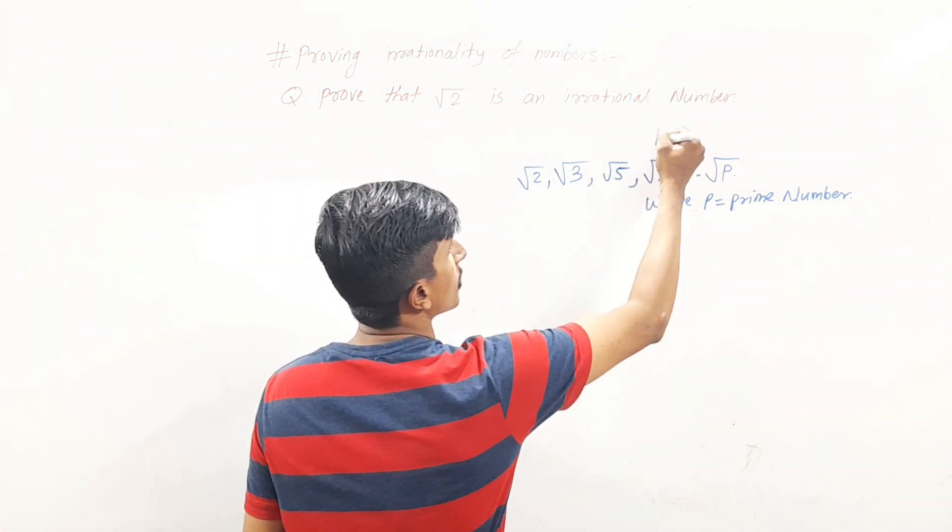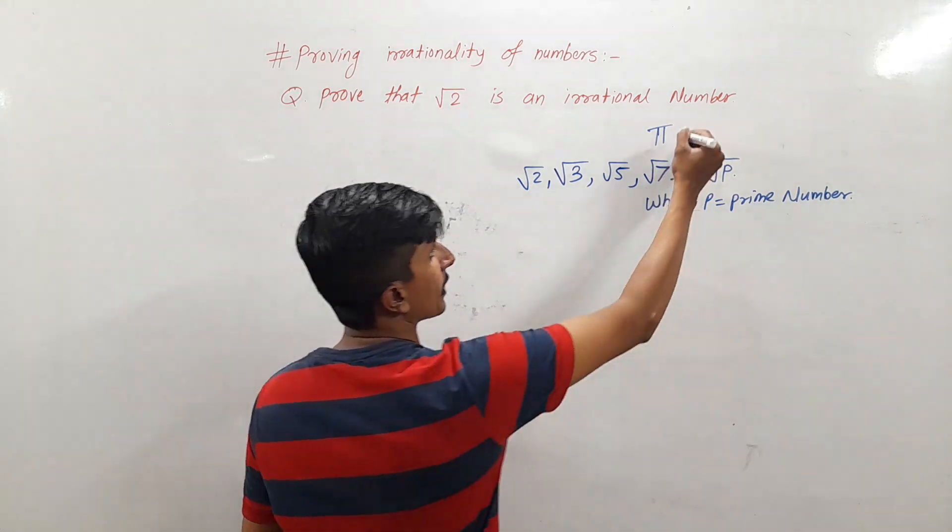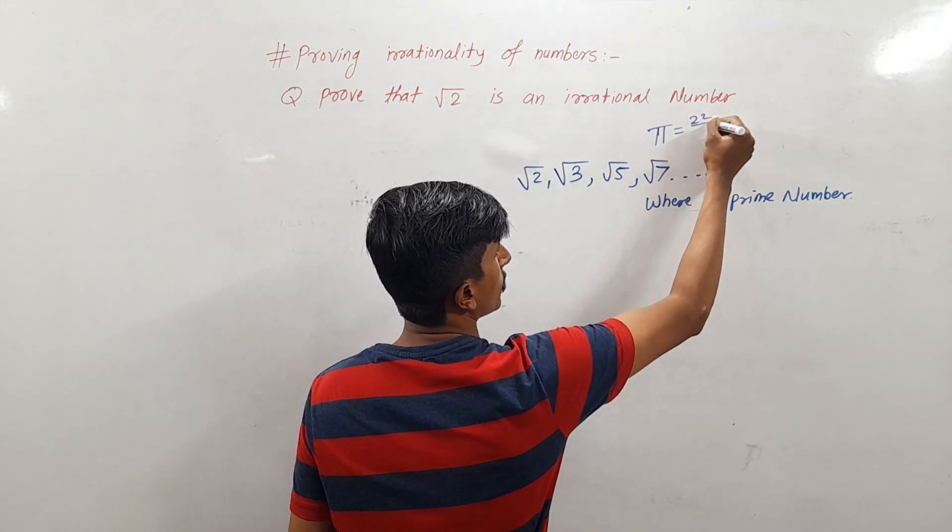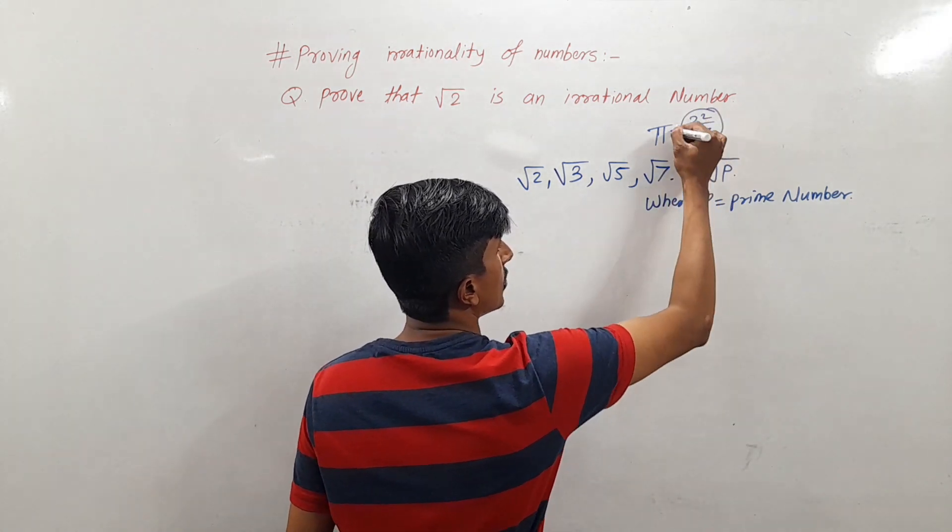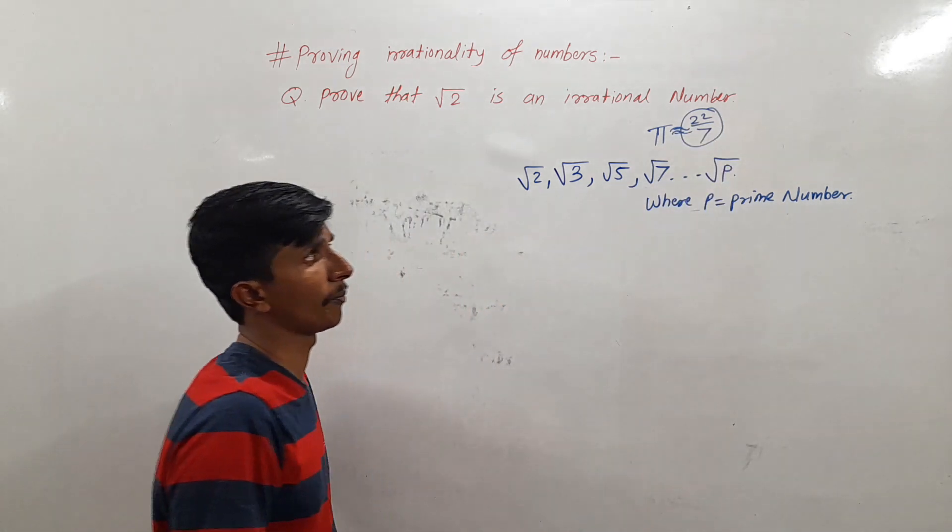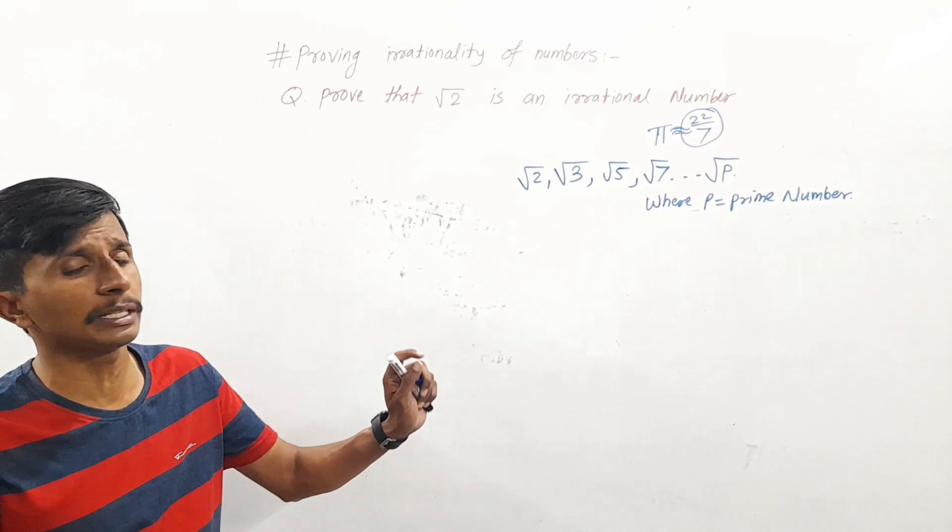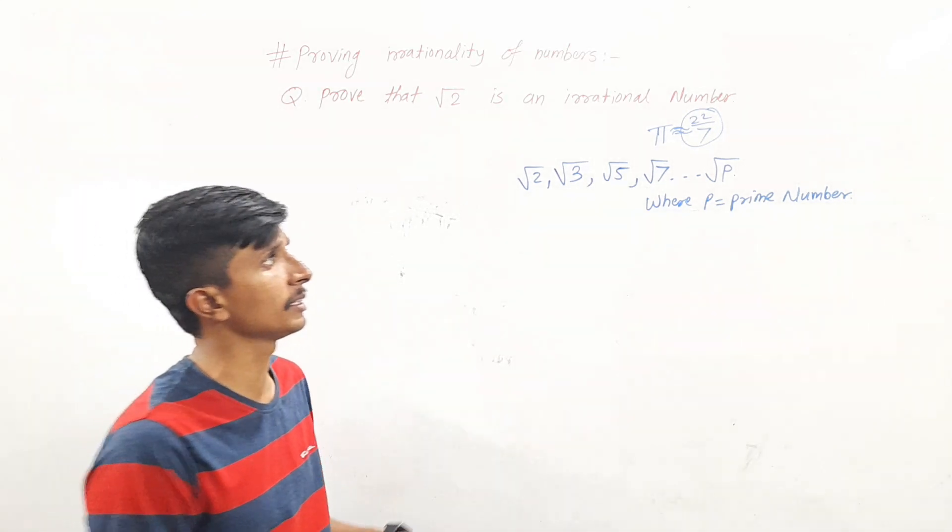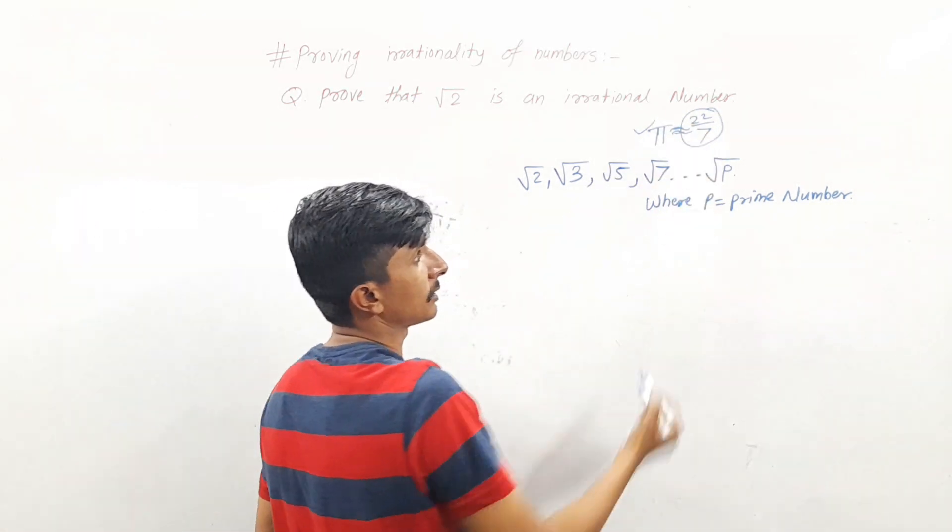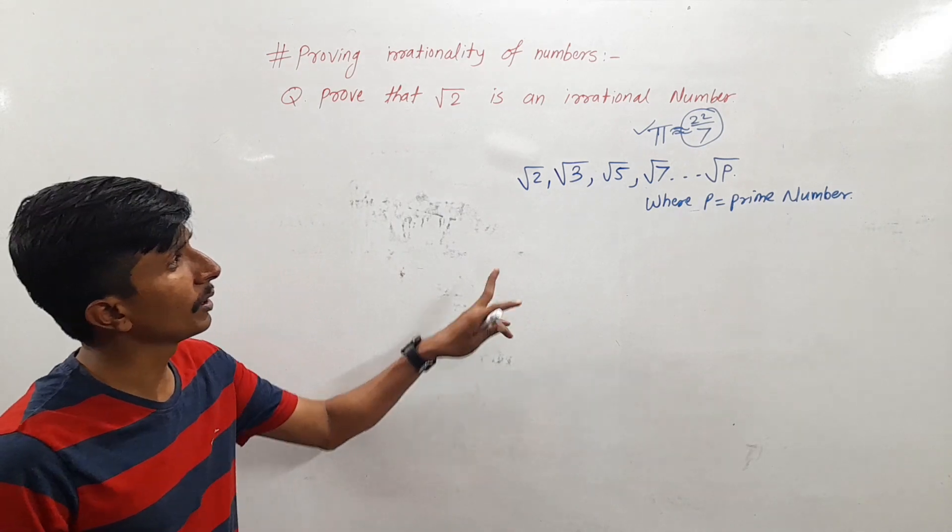As well as, pi is also an irrational number. But pi has one rational approximation, 22 by 7. This is the approximate value of pi, not the fixed value. So therefore, 22 by 7 is a rational number, but pi is an irrational number.